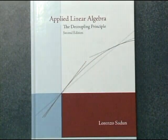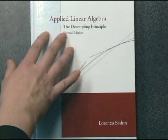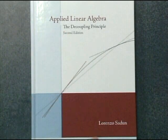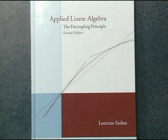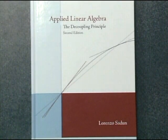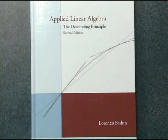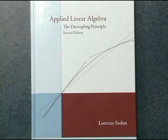The textbook for the course is Applied Linear Algebra: The Decoupling Principle by Lorentz Sadun. This book has just been reprinted as a second edition. I think it's written very accessibly — it's very nice to read, and our course will follow this textbook quite closely. You can buy it at the Columbia Bookstore or on Amazon.com.